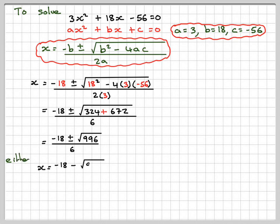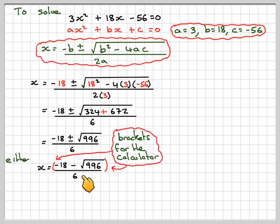Now, we take our calculator out. Either x = (-18 - √996) / 6. So putting brackets in helps us with the calculator because it makes the calculator divide the whole top numerator by 6. So we should get -8.2599, which is -8.26, which is just not possible because you can't have a negative x in this problem.